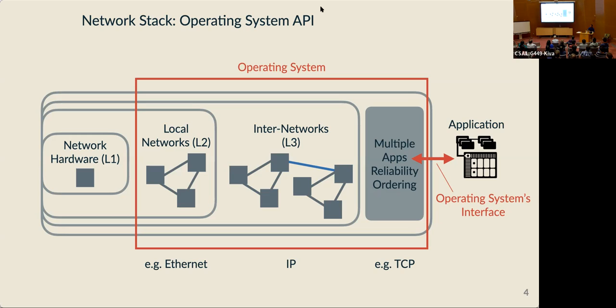The reason it's called the network stack is that it's composed of layers, each of which provides a slightly higher level abstraction to the components below. The lowest layers start with the actual network hardware — things you can touch. From there we get local networks, then internetworks like the internet, and then machine level services like multiplexing and reliability.